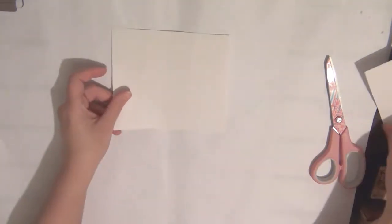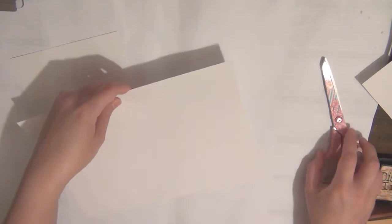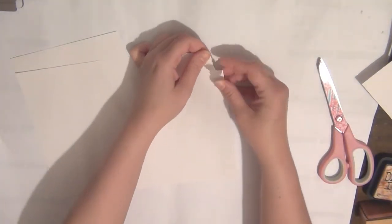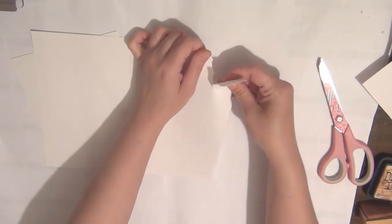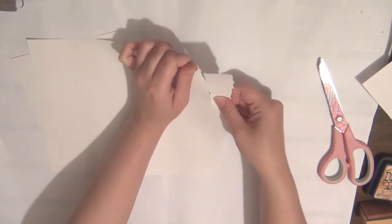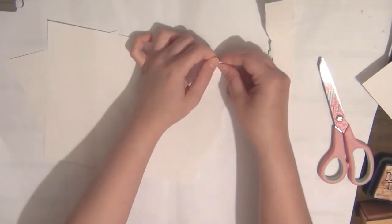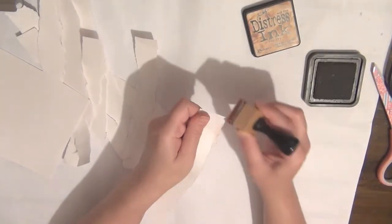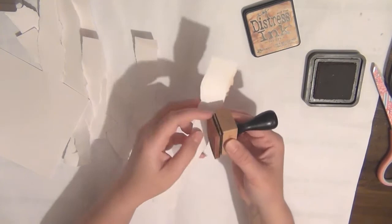First thing you need to do is take a piece of card, and this needs to be big enough for you to use your die with. Then take a larger piece of white card and just start tearing this into strips. Once you've done that, take your ink and just ink around the edges. I'm using Tea Dye by Tim Holtz here, but you can use any brown ink you have.